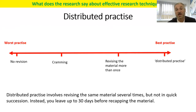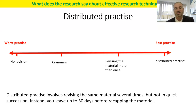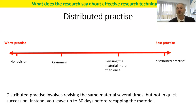Start now, sort it out now, and do something every day. I like to talk about a 20-mile march: you march 20 miles every single day — meaning you do the same amount of revision, homework, and coursework every single day so that every single day you're building up your distributed practice. Don't try to do 50 miles one day and nothing the next — you wear yourself out and it doesn't work.